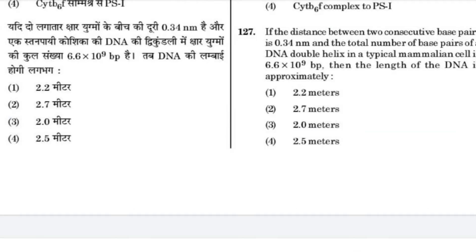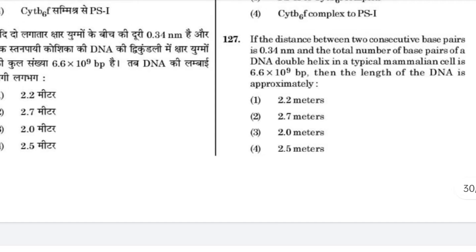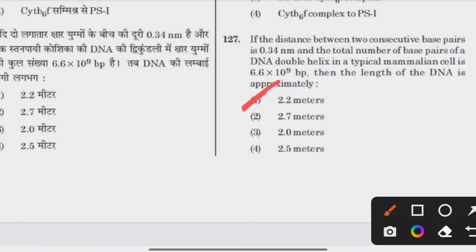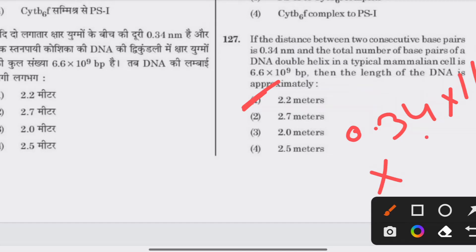If the distance between two consecutive base pairs is 0.34 nanometers and the total number of base pairs in a DNA double helix in a typical mammalian cell is 6.6 × 10⁹, then the length of DNA is approximately 2.2 meters. Calculation: 0.34 × 10⁻⁹ m × 6.6 × 10⁹ = 2.2 meters.